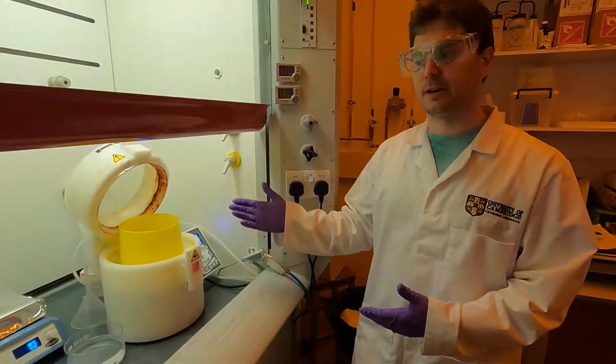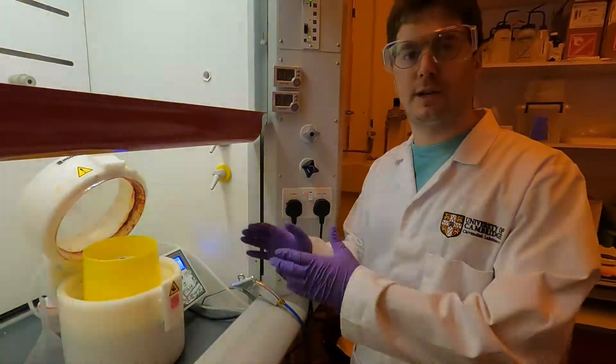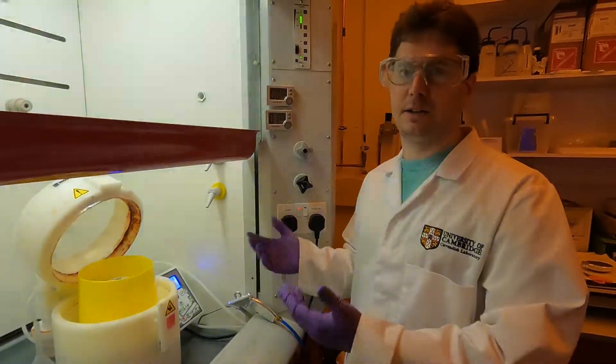Now the next step will be the spin coating. Before you take the sample off the hot plate and get ready to spin coat, you want to make sure that the settings for the spin coater are the ones that you want.